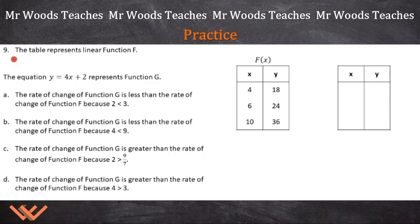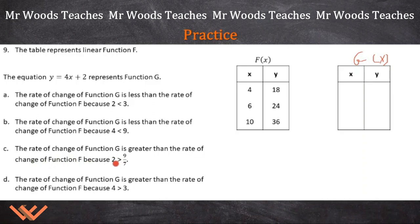Number 9: the table represents linear function f. We have this linear function f. The equation y equals 4x plus 2 represents function g. The answer choices compare the rate of change of g versus f — for example, "rate of change of g is greater than rate of change of f because 4 is greater than 3," or other comparisons using values like 2, 9-7, etc. We need to understand what the rate of change is.